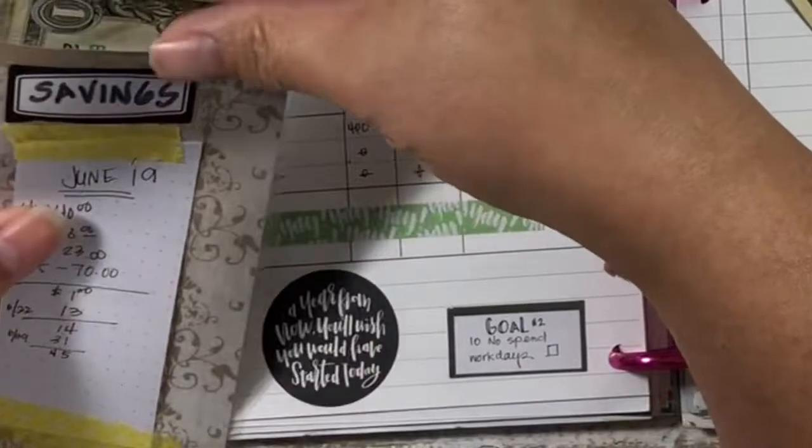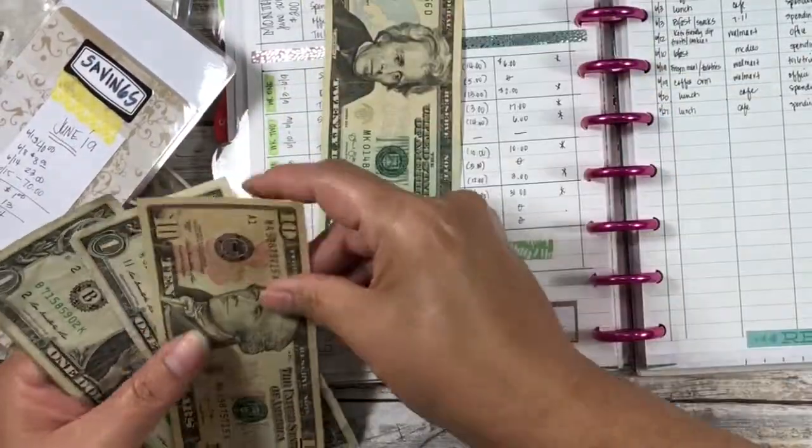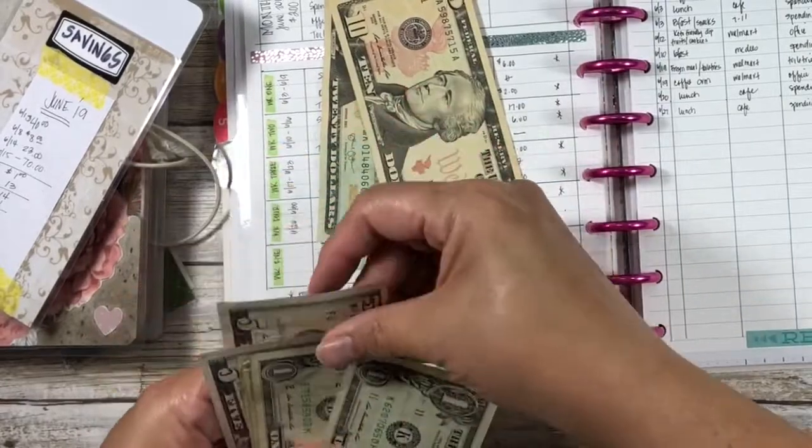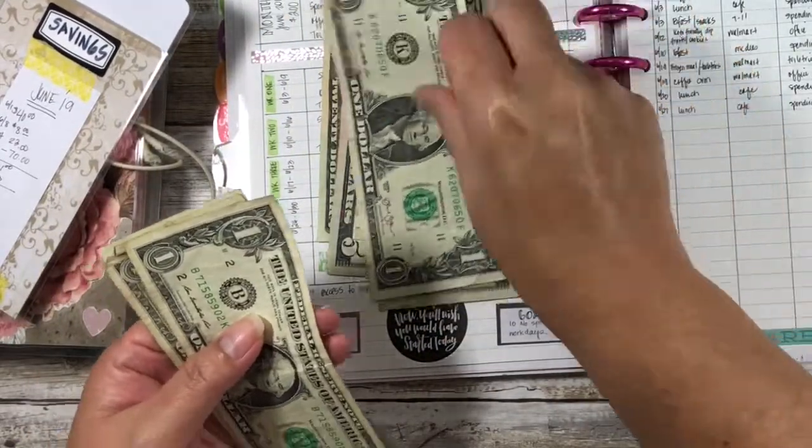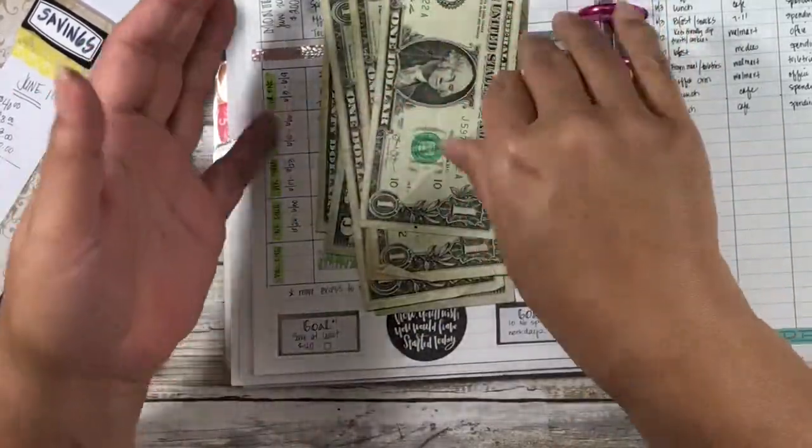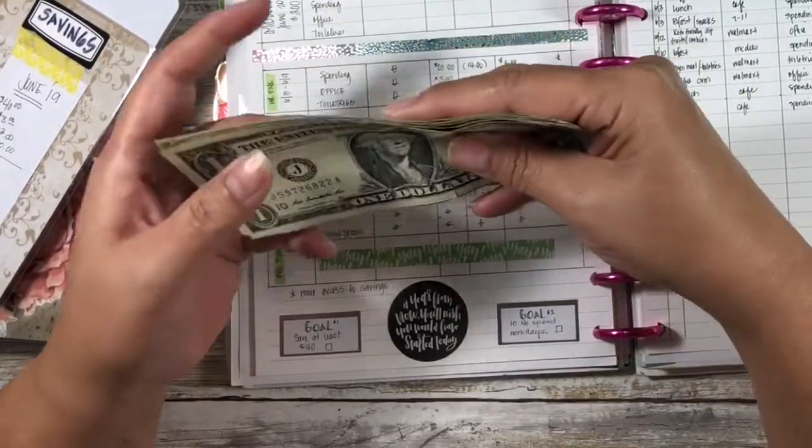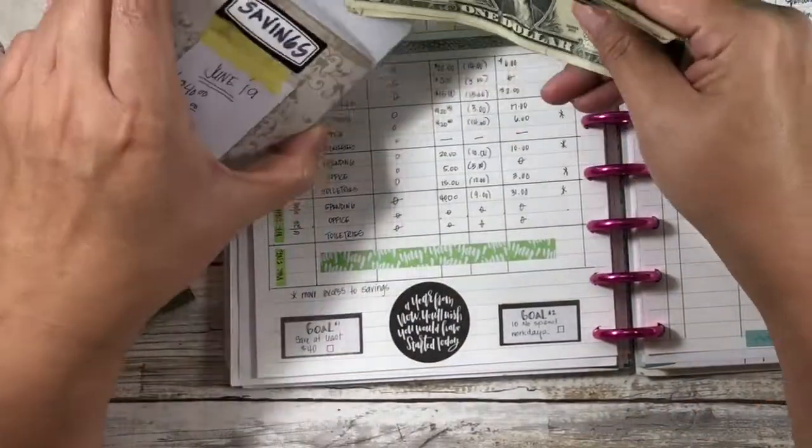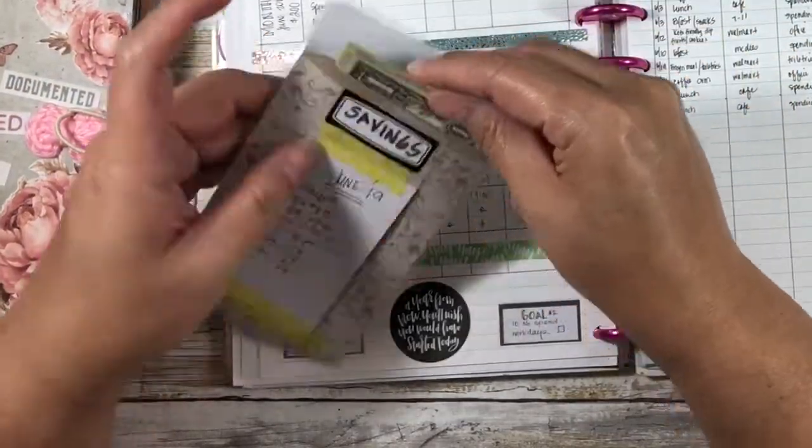$31, so we should have $45. Let me count: 20, 30, 35, 40, 41, 42, 43, 44, and 45. So we made our goal guys, we made our goal!